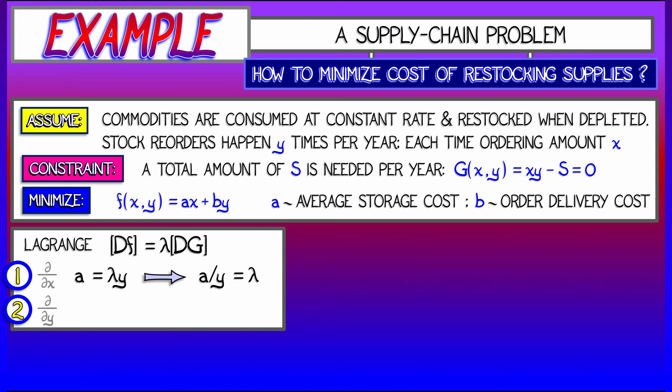Now there's a nice symmetry here. And when we take the partial derivatives with respect to y, what we're going to get is a very similar equation. Now we're going to get b equals lambda times x. Solve that for lambda. Lambda equals b over x.